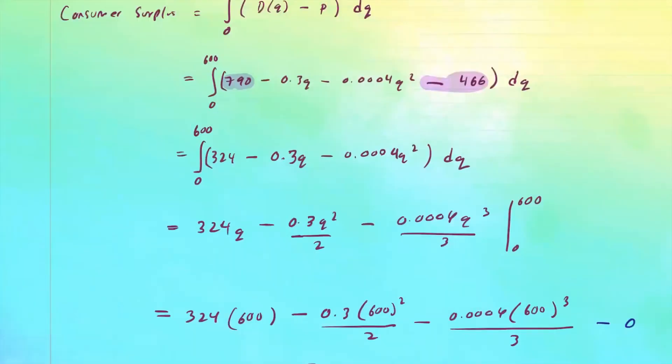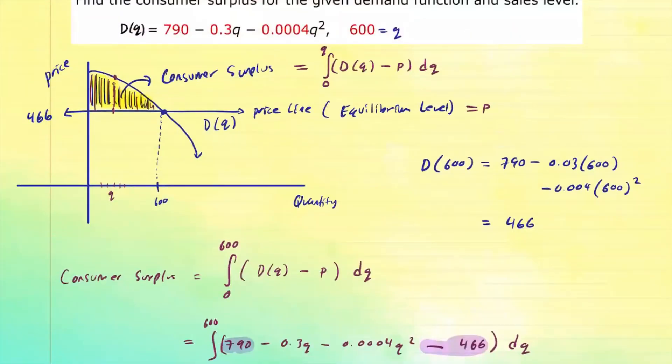So what we have computed is this area of this region right here, which is bounded by the curve demand function and the price line, which is the equilibrium level.